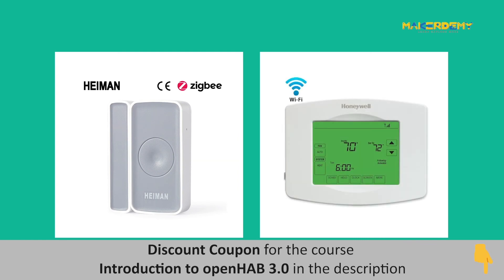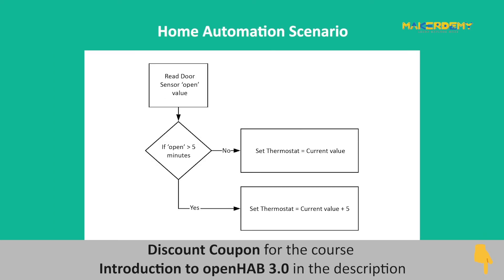A useful scenario for home automation would be increasing the thermostat value when the door is left open for, say, five minutes during winter.